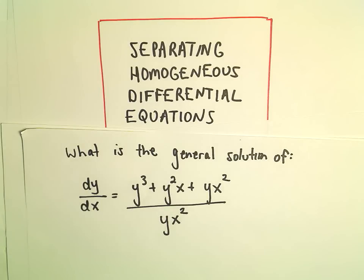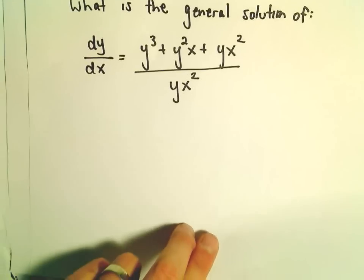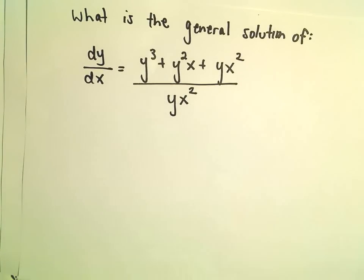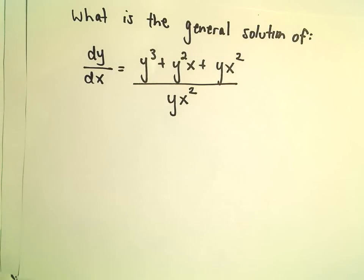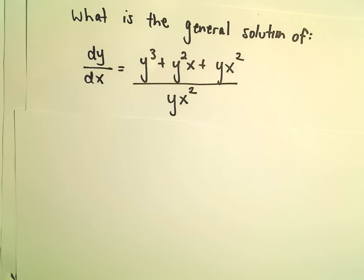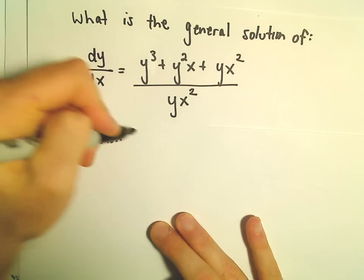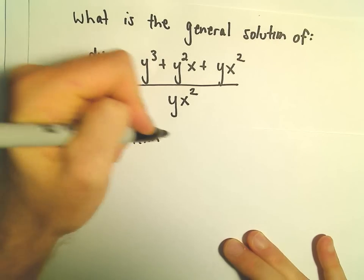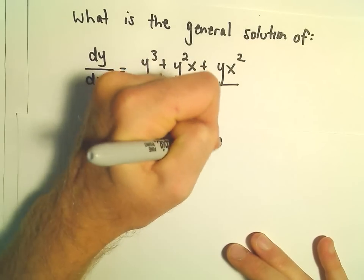Here we're going to do another example of solving a homogeneous differential equation by doing a change of variables. The first thing we really need to do is make sure that this is homogeneous — basically, does each term have the same degree?